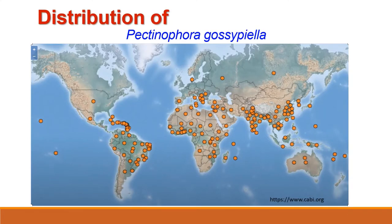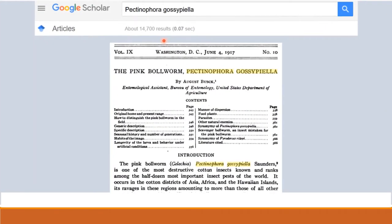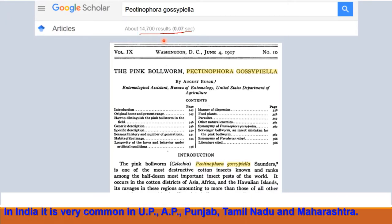The distribution map shows that this pest is found in all countries that cultivate cotton and is a major problem for cotton farmers worldwide. It is such a huge problem that scientists have written 14,700 research papers on this pest. In India, it is very common in Uttar Pradesh, Andhra Pradesh, Punjab, Tamil Nadu, and Maharashtra.